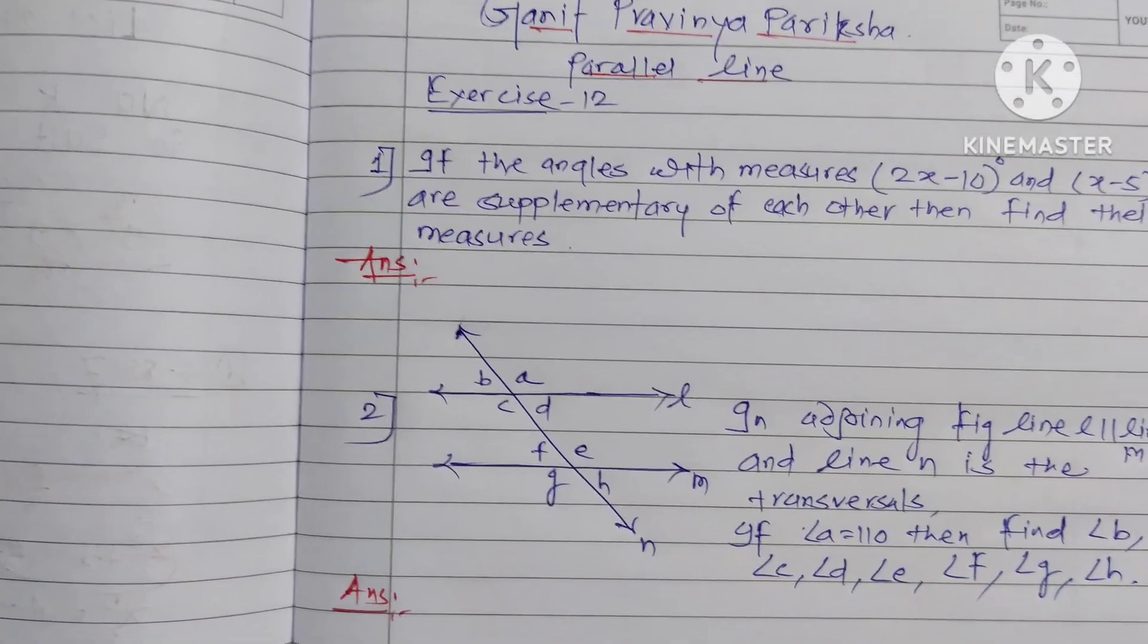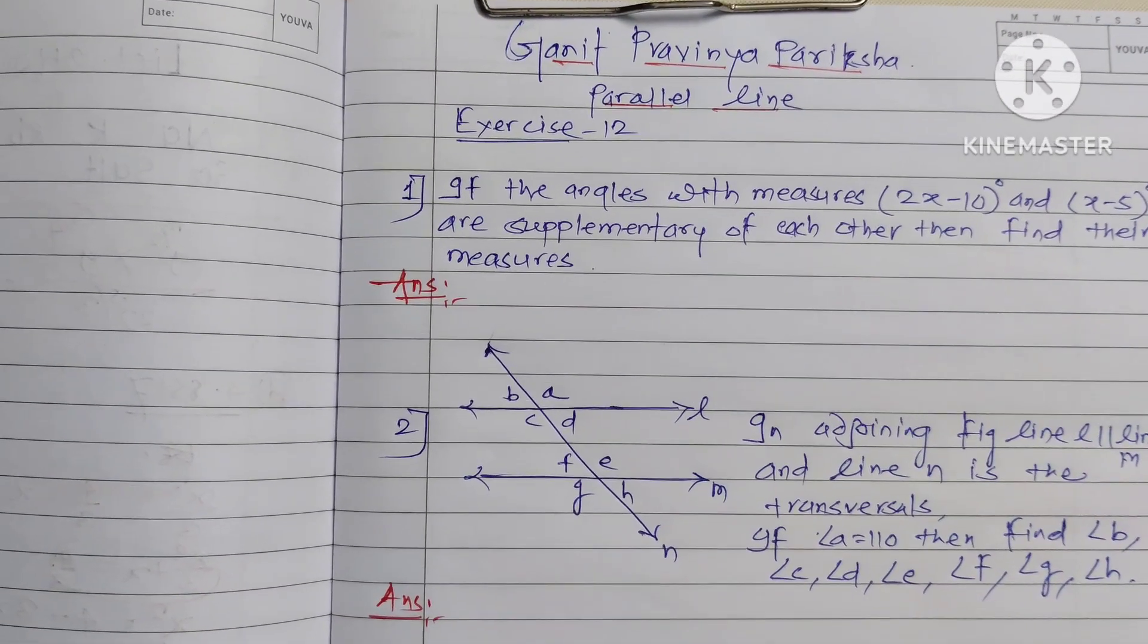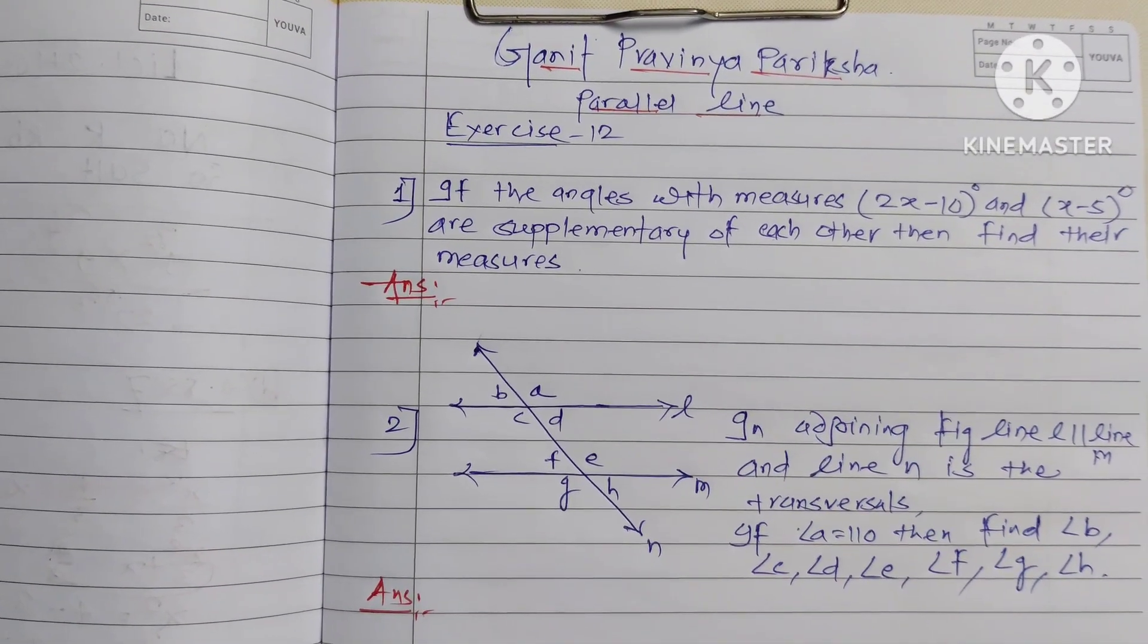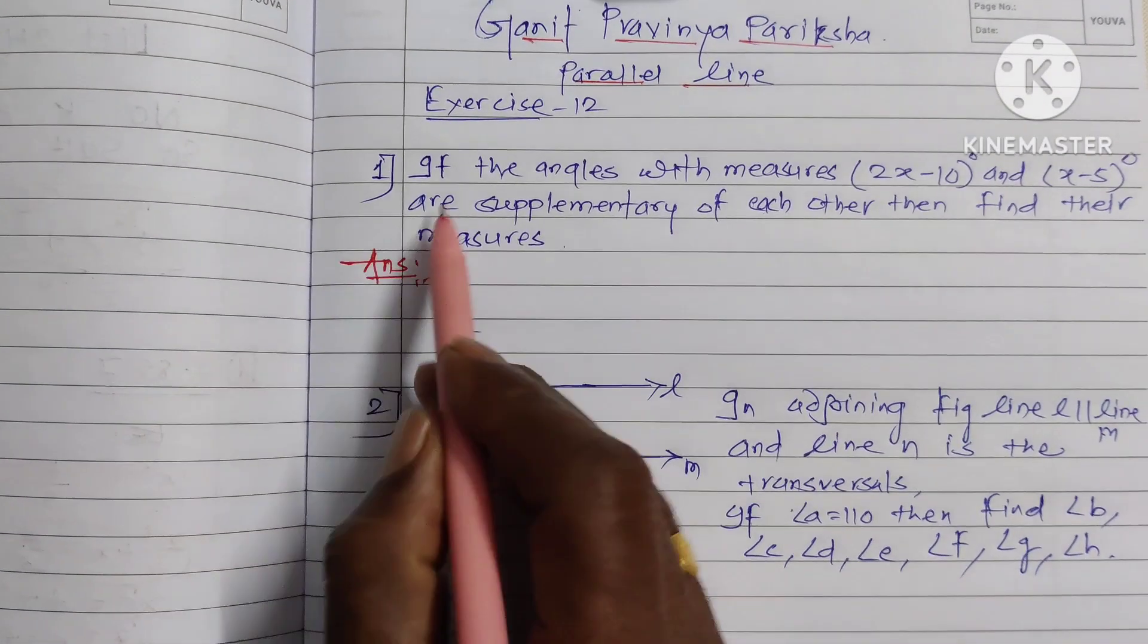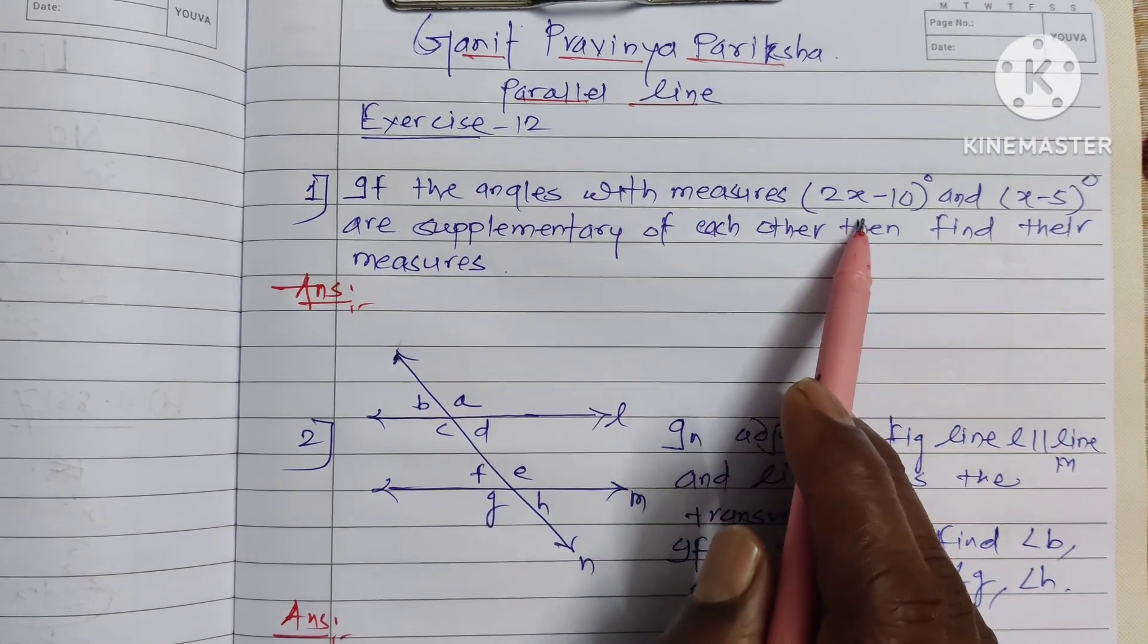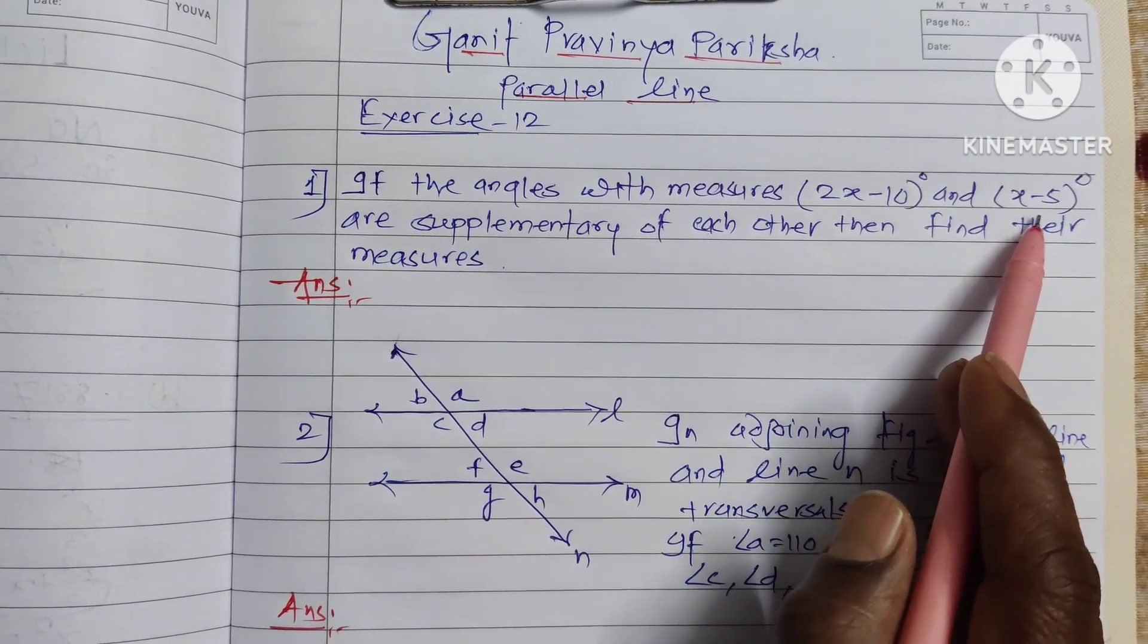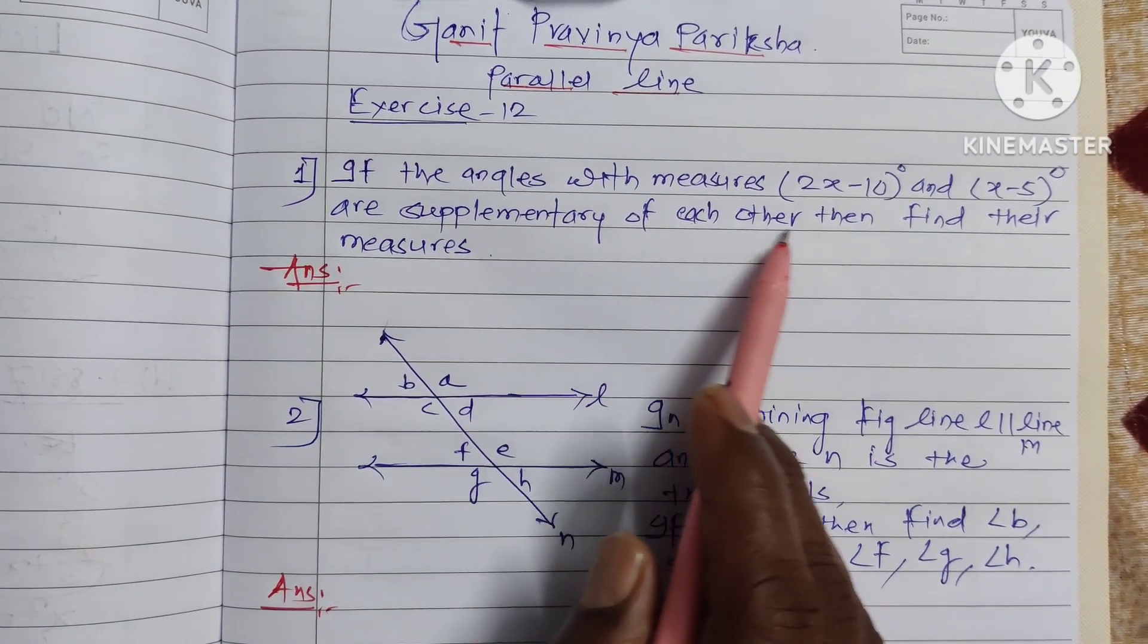Welcome to this class. In today's class we are going to see parallel lines and Exercise number 12. Question number first is: if the angles with measures 2x minus 10 and x minus 5 are supplementary of each other, then find their measures.